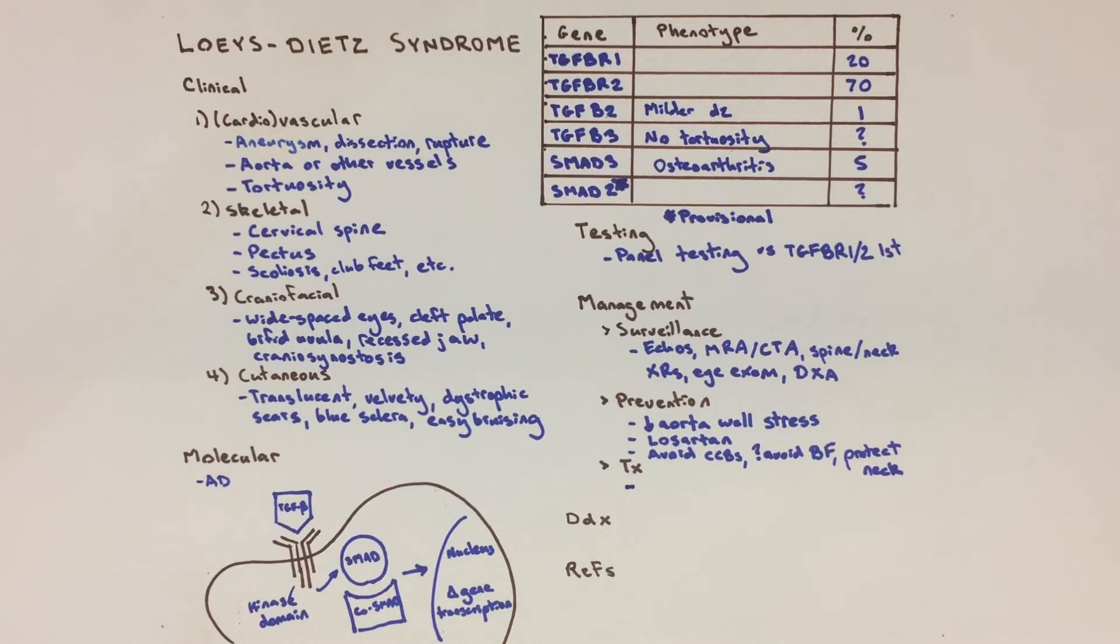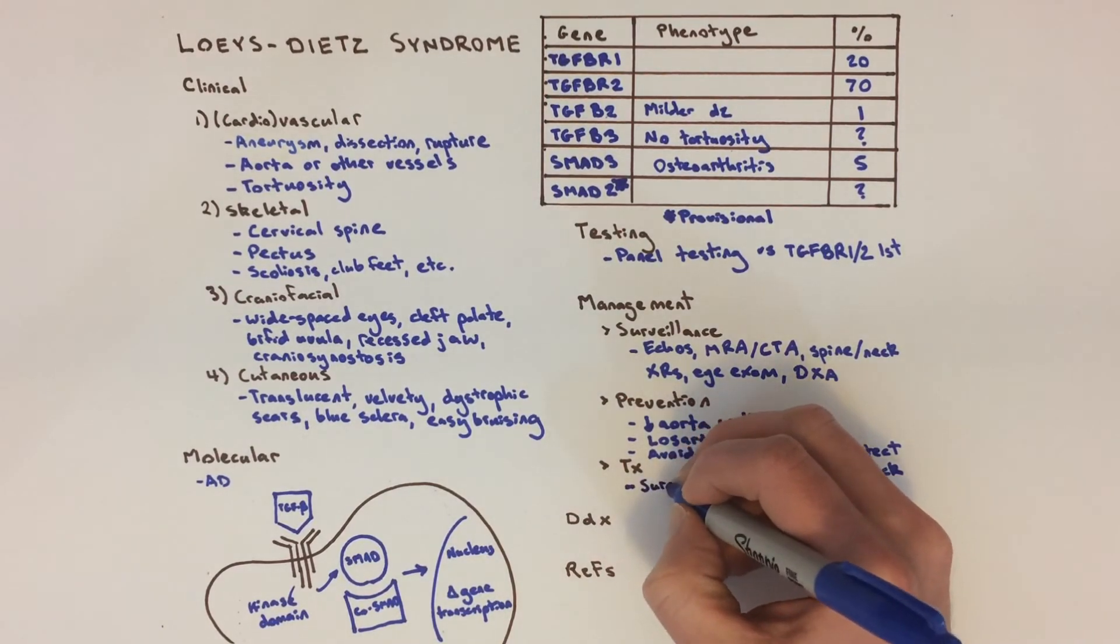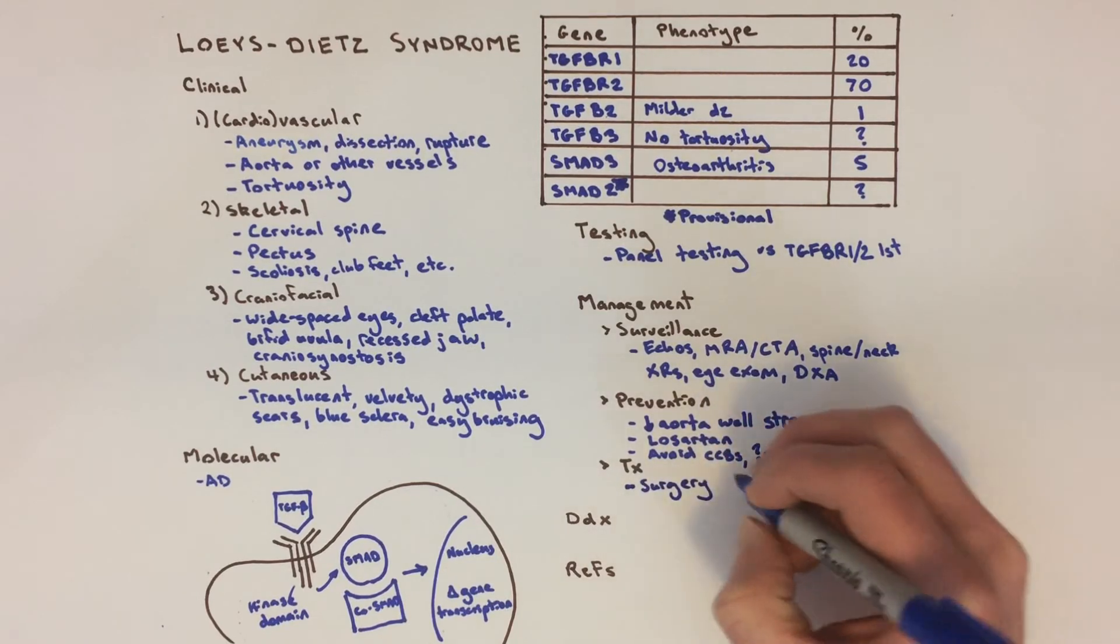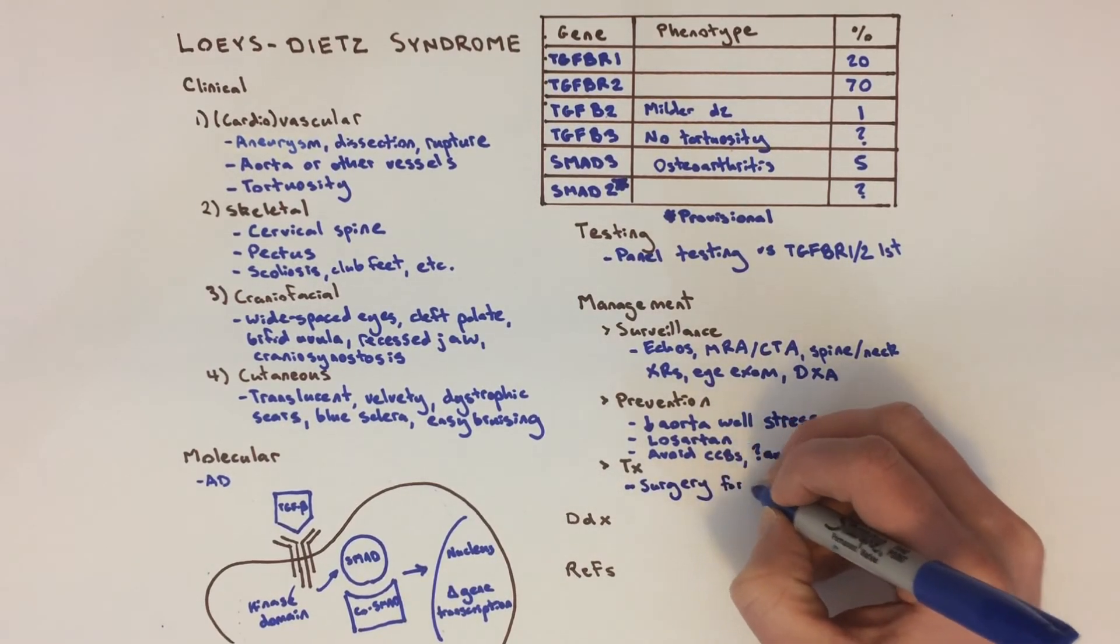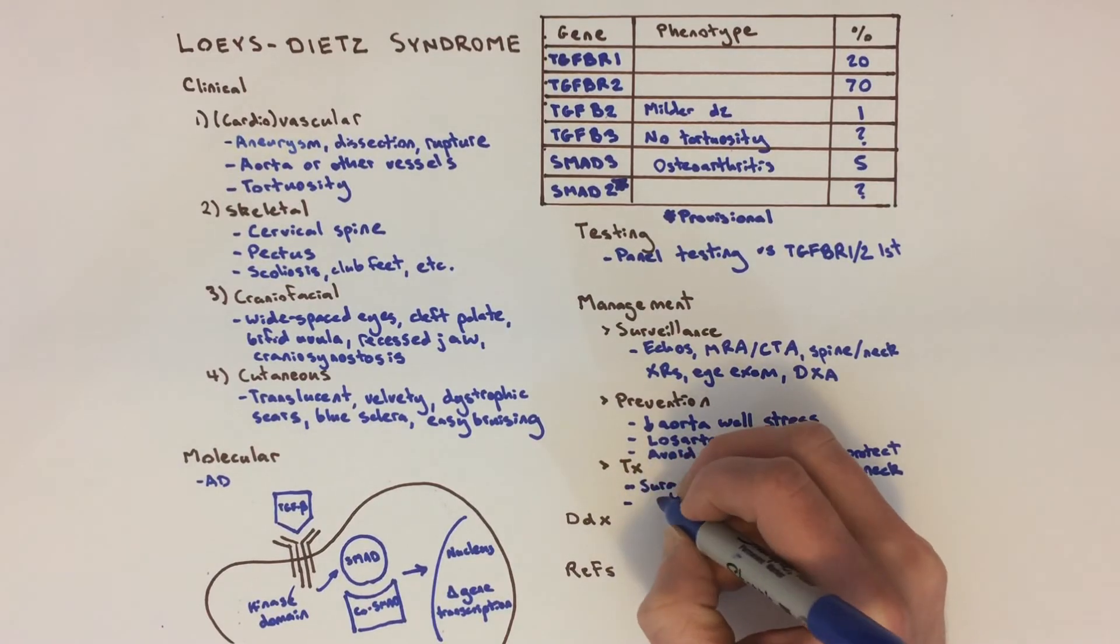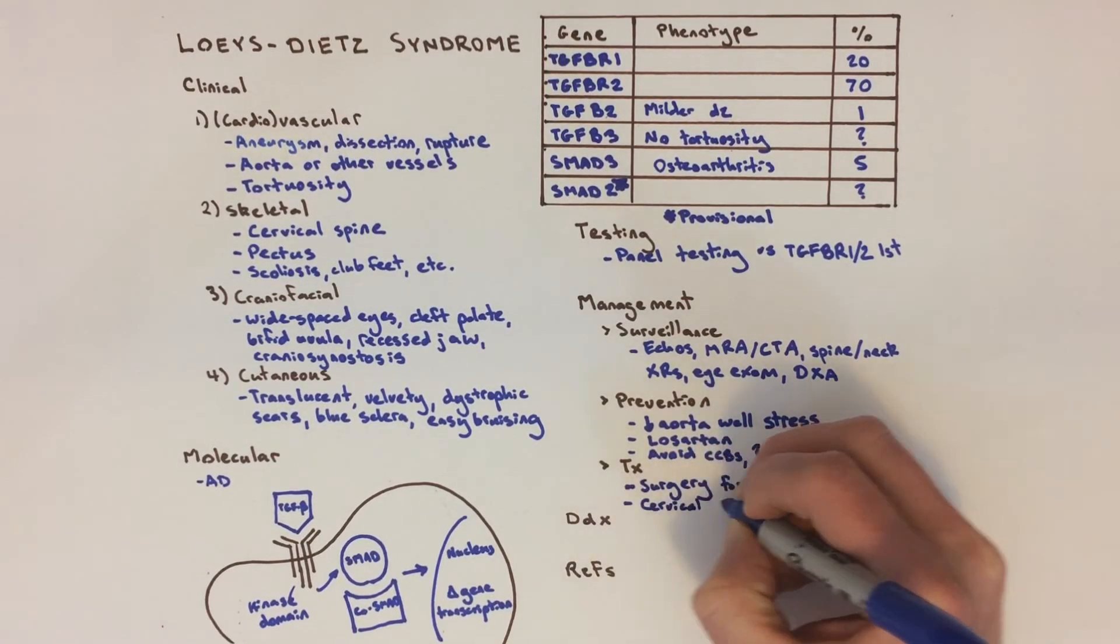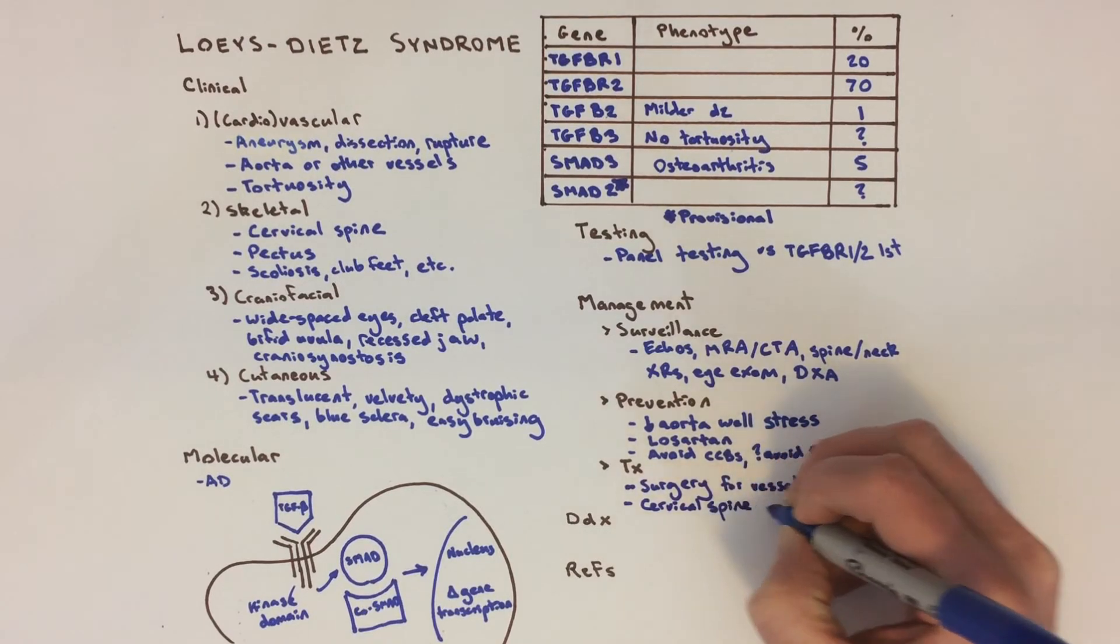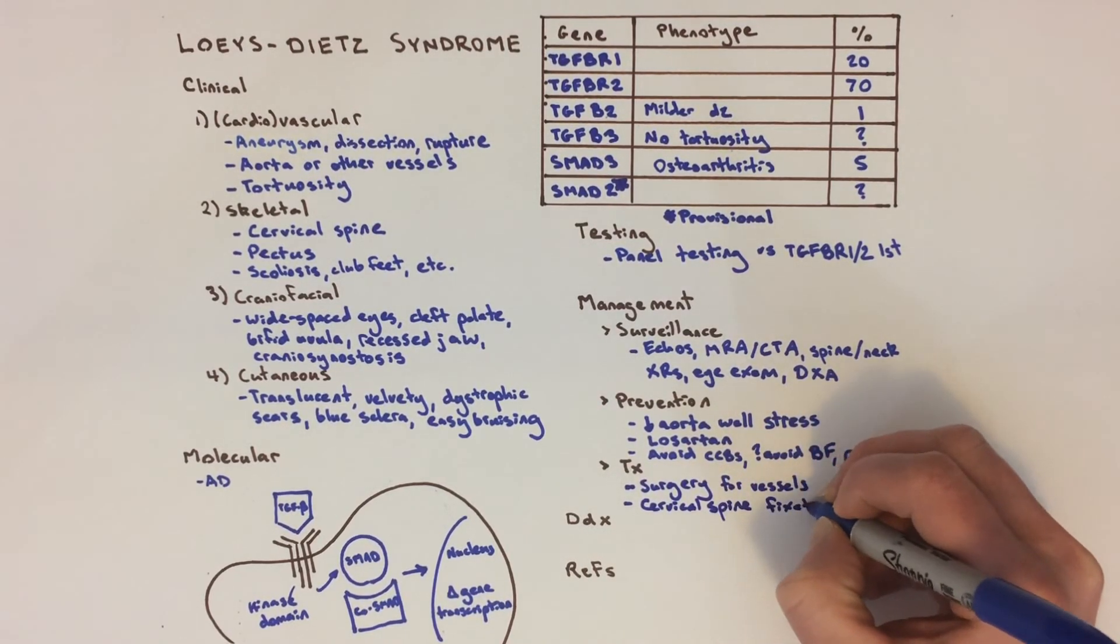If an aneurysm or dilation of the aorta or other blood vessels occurs, these are amenable to surgical repair. Cervical spine instability can be fixed with metal hardware and bone grafting. Standard treatment is used to correct club feet, cleft palate, craniosynostosis, scoliosis, and other features of the syndrome.